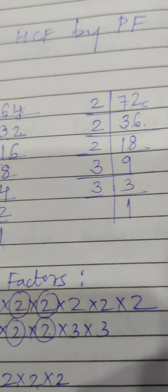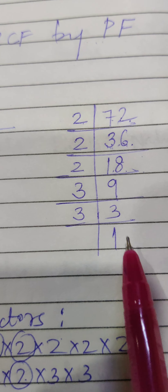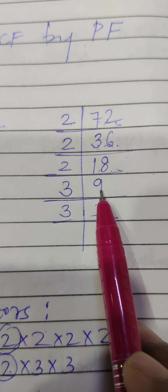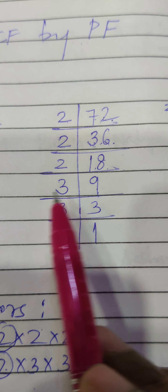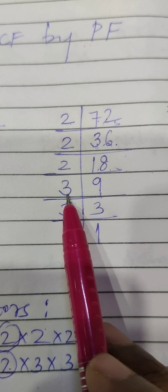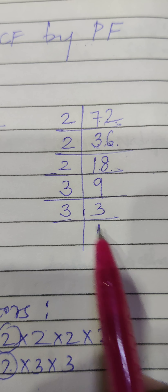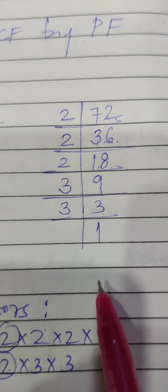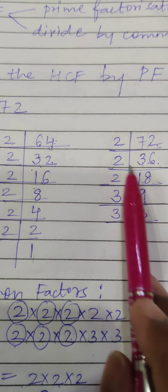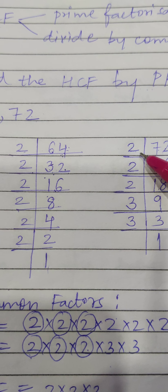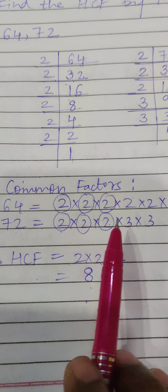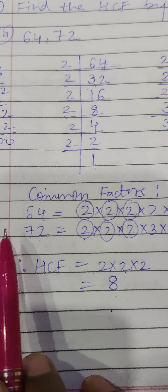2 nines are 18. Now this 9 will not divide by 2, so what do we do? We take 3, because it goes in the 3 times table: 3 threes are 9 and 3 ones are 3. In this way we have found all the prime factors of both given numbers.